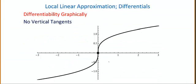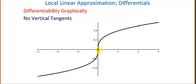And finally, a third thing that prevents a function from being differentiable is a vertical tangent. This is the cube root of x, and it's not differentiable at zero because there's a vertical tangent at zero.